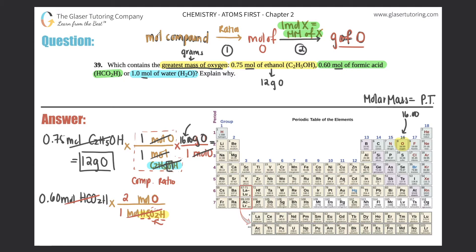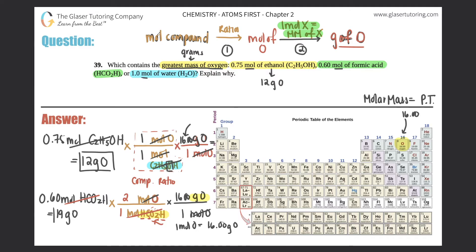Now we're going from moles of oxygen to grams of oxygen. Mole of oxygen on the bottom, gram of oxygen up top. One mole of oxygen equals 16.0 grams of oxygen — that comes from the periodic table. The 16.00 goes up top, moles of oxygen cancel, and we do the math: 0.6 times 2 times 16, which is 19.2. Applying sig figs — we started with two sig figs — that rounds to 19 grams of oxygen. That's the answer to the second one.